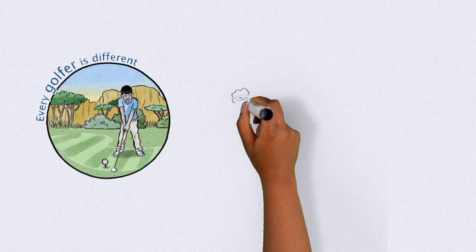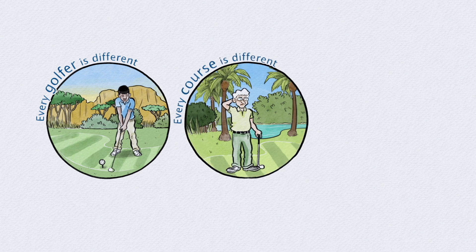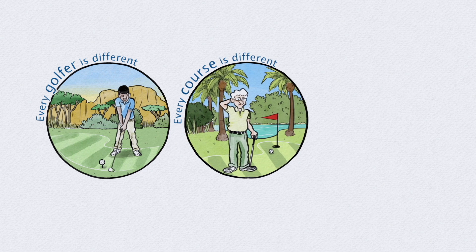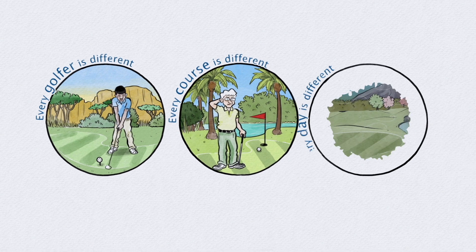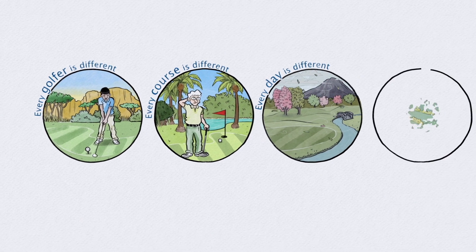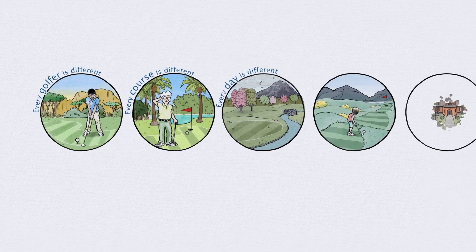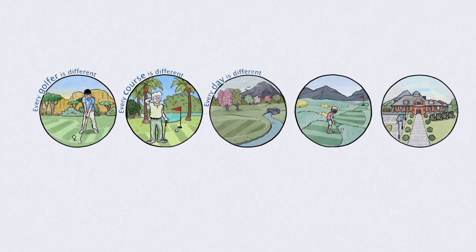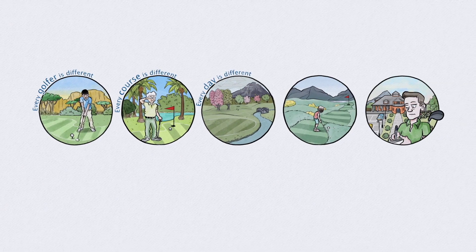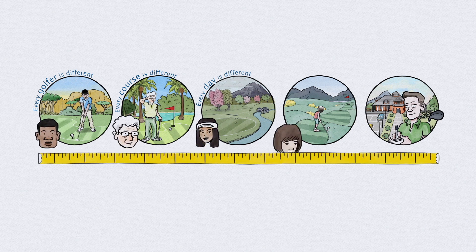Every golfer is different. Every golf course is different. Every day is different. The aim of the World Handicap System is to take all these differences and produce a single measure of a player's golfing ability.